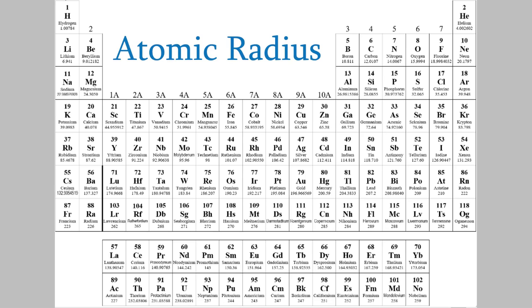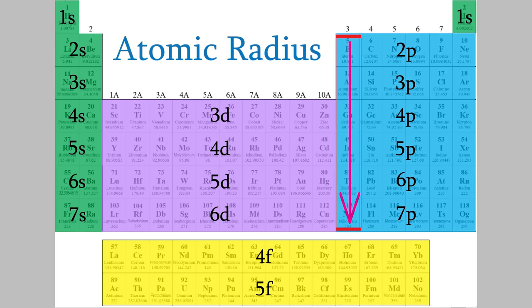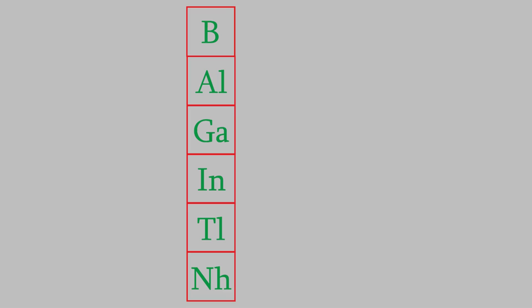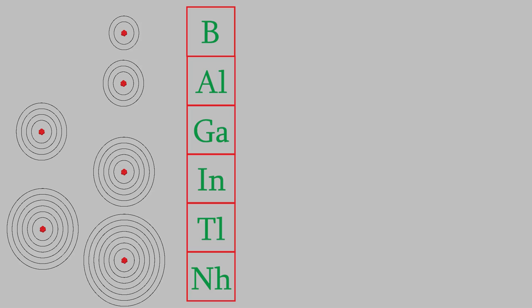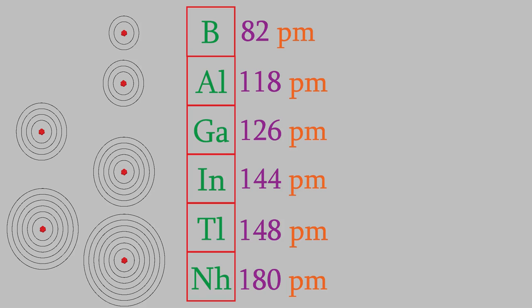As you might expect, the radius of an atom increases as we go down a column of the periodic table. This is because, as we go down, the value of n increases, which means the number of electron shells increases. So, for example, if we look at the atoms in this column, the value of n increases from n equals 2 up to n equals 7, and the atomic radius also increases from 82 picometers up to 180 picometers. A picometer is a trillionth of a meter. So atoms get larger as we go down the periodic table.